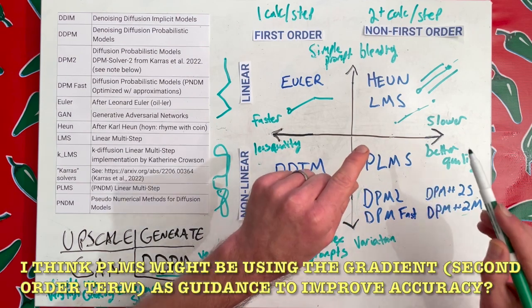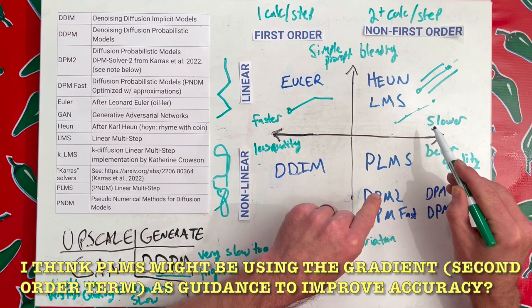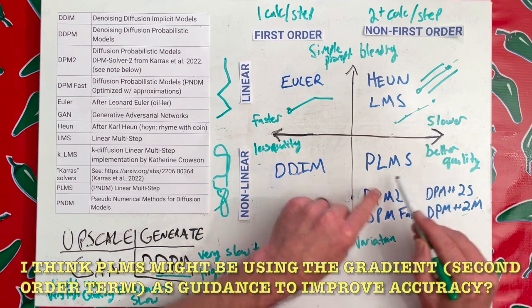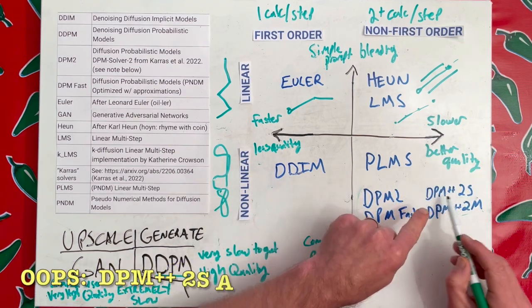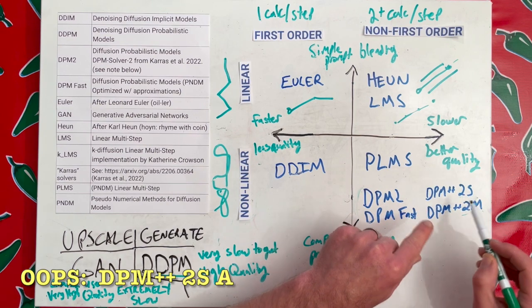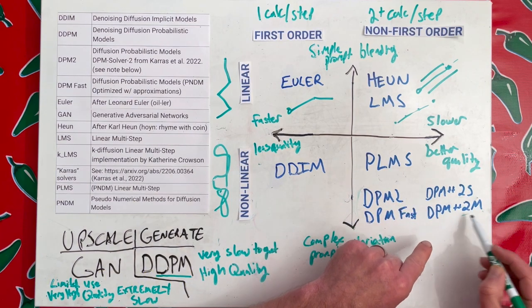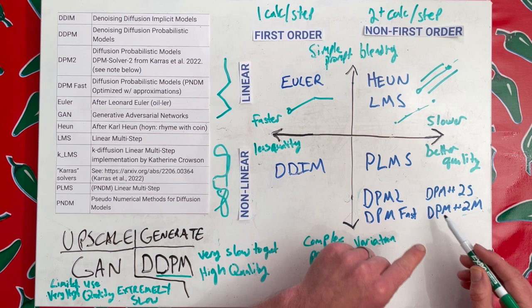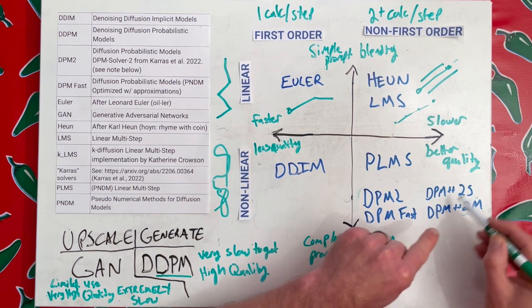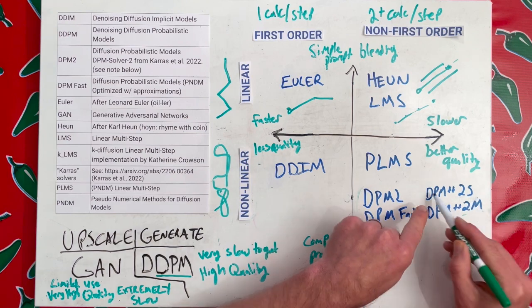PLMS is similar to the LMS in that it is using that linear multi-step, but it is removing noise. The DPM++ is using a second-order function, more calculation intents to remove the noise. The DPM++2M, that means multi-step, so it is doing a denoising and an image generation process in a two-step versus doing it all in one step like you would do right here.